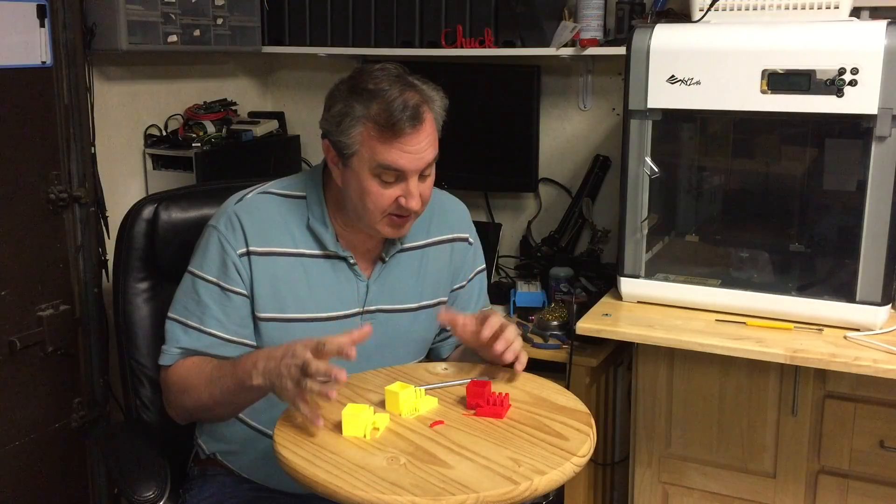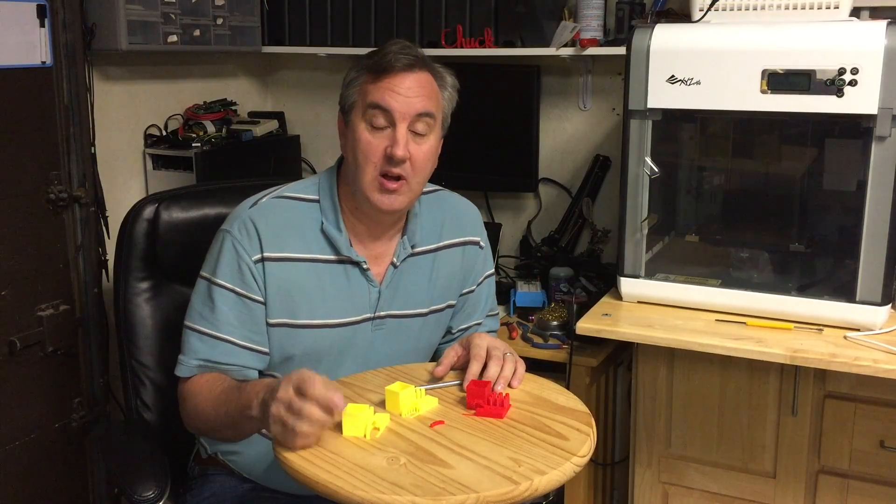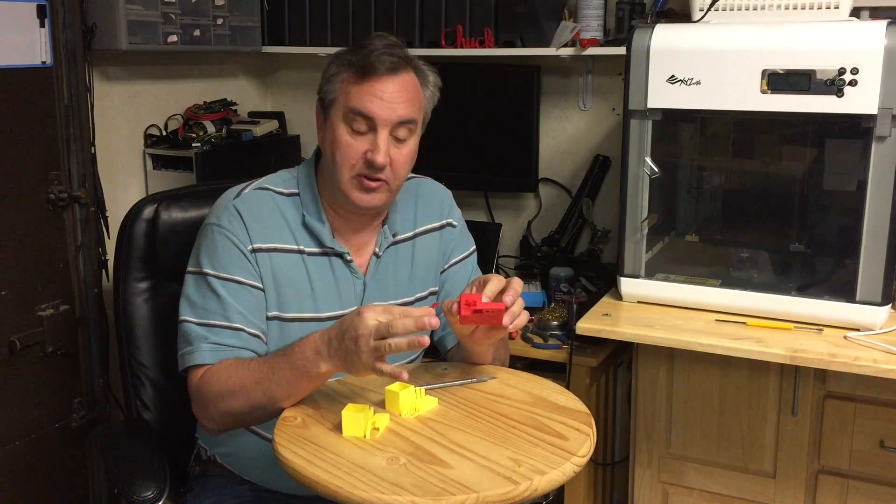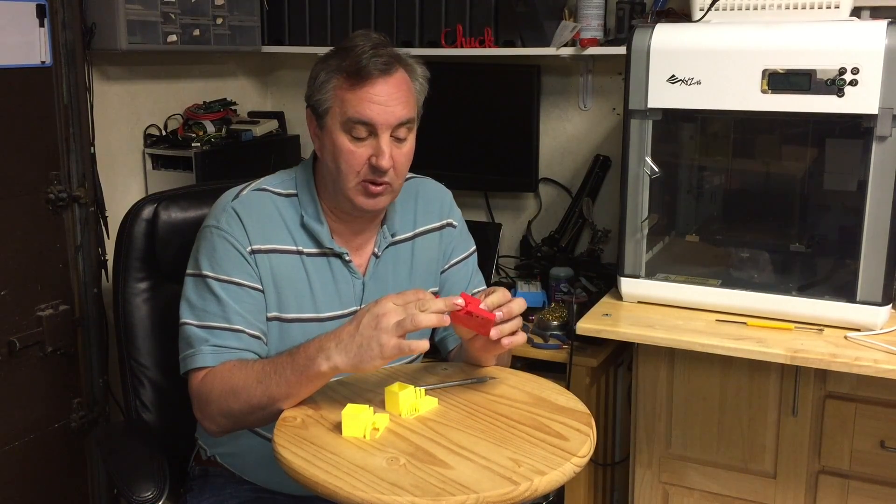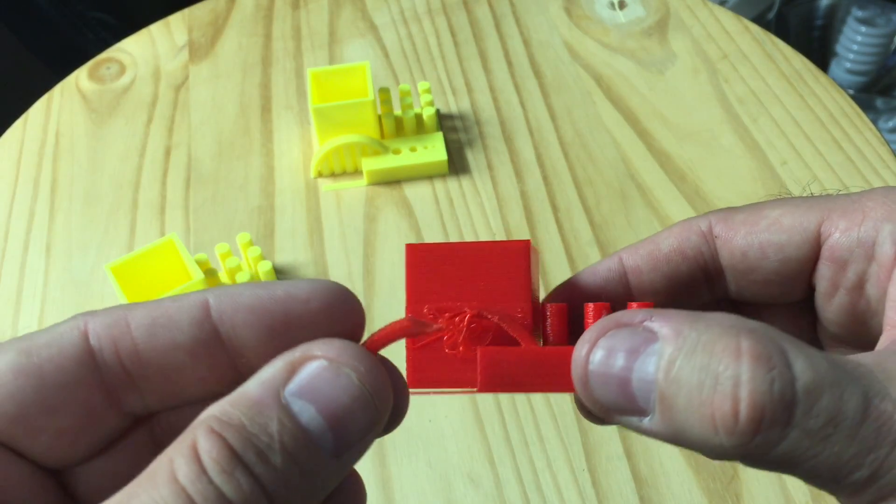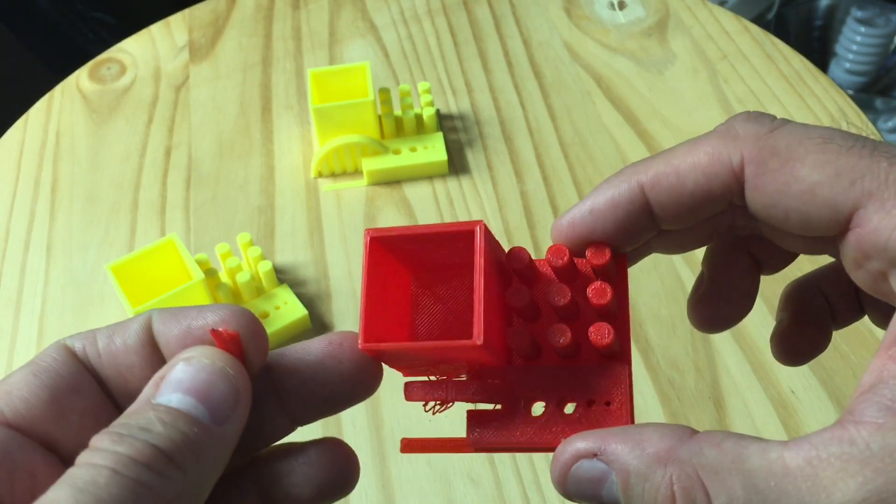So here's the prints. I actually made three of them. The first print I didn't use supports for the arch. And that's the result. It didn't have the support. The print didn't come out very good as far as the arch. But the rest of it is perfect.